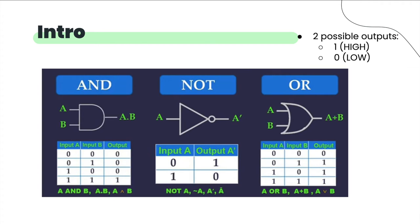Have you guys looked through a truth table before? An AND gate means all inputs have to be 1 in order to output 1 — you can have more than two inputs, but all of them have to be 1. For an OR gate, you just need one input to be 1 for the output to be 1. A NOT gate simply inverts the input. These gates only have two input and output possibilities: high or low, also referred to as 1s or 0s.